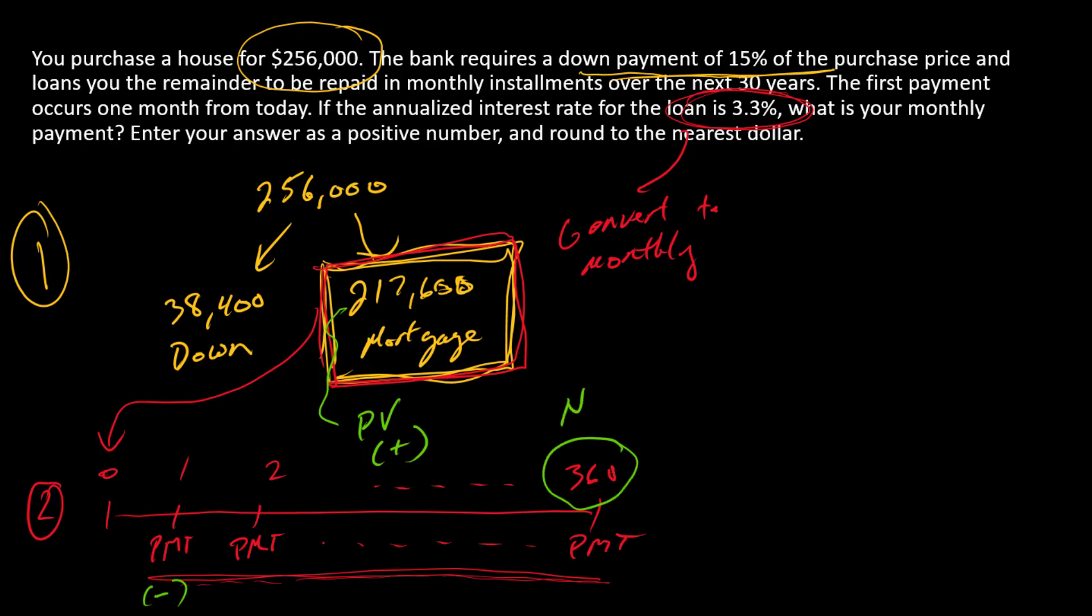How many periods are on this timeline? 360. We have a monthly timeline, so there's 360 months. And what is our monthly, or our periodic interest rate? I here is going to be 3.3 divided by 12.